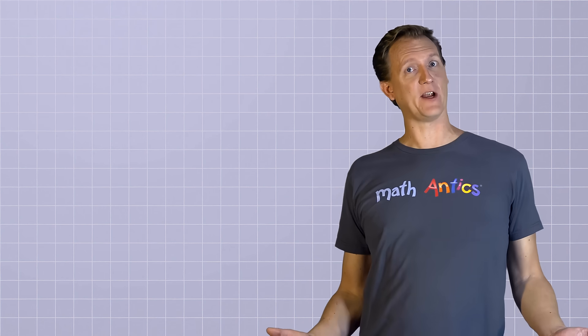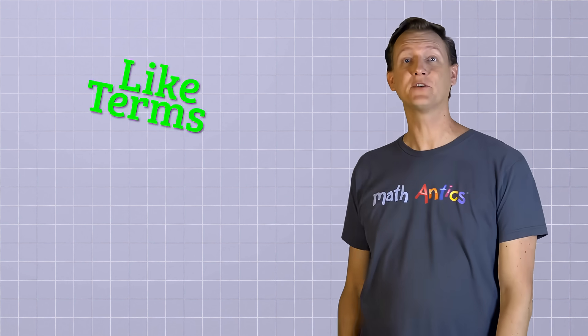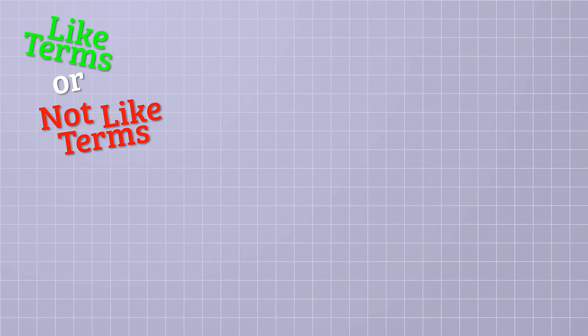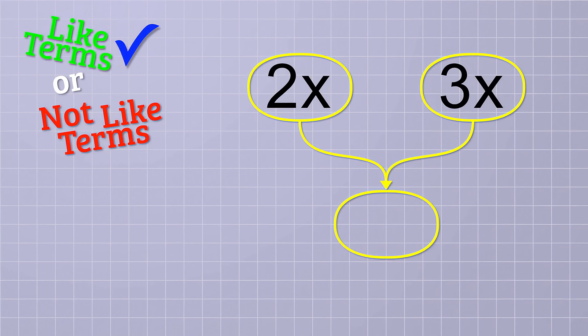And to help you get better at identifying like terms, let's play a little game called like terms or not like terms. The first pair of terms we'll consider is 2x and 3x. Are they like terms? Yup. The variable part of both terms is the same, x, so we can combine them into a single term. We do that by adding the number parts and keeping the variable part the same. 2 plus 3 is 5, so the combined term is 5x.